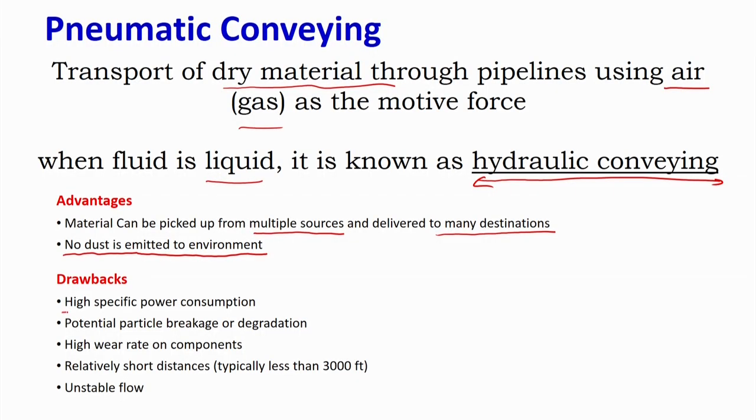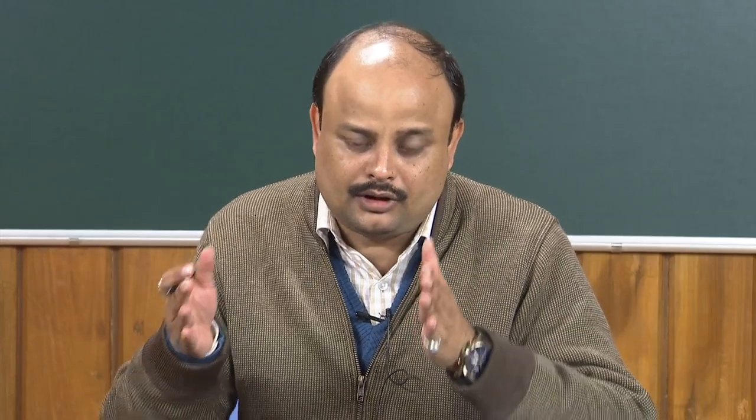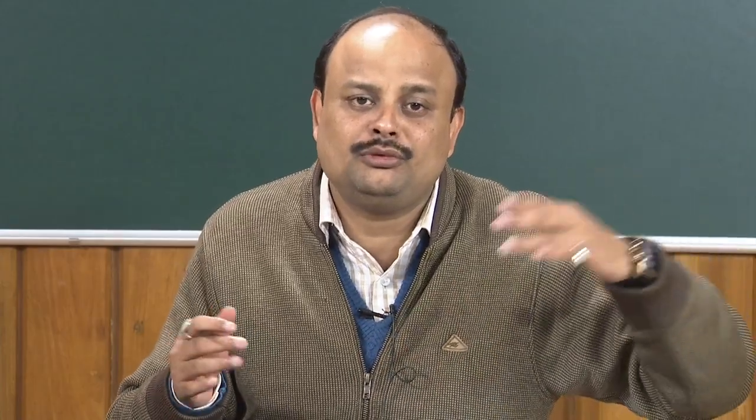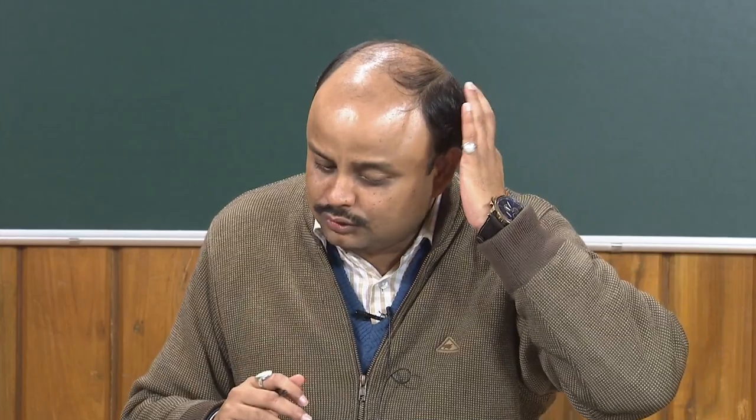There are several drawbacks compared to the advantages. The main advantage is the environmental concern, but pushing solids requires high energy. The first disadvantage is high specific power consumption — you have a very high power consumption because you must push solids from one place to another. Think about moving 100 kg of ash over 100 meters: the energy required for pneumatic conveying is similar to that manual effort.